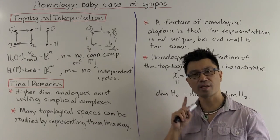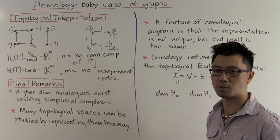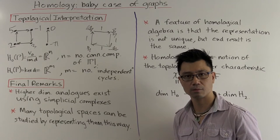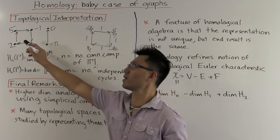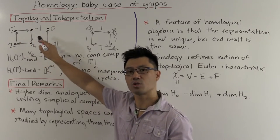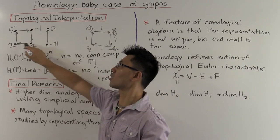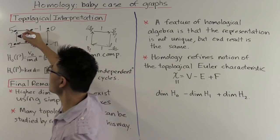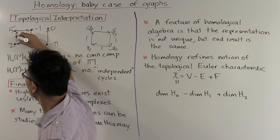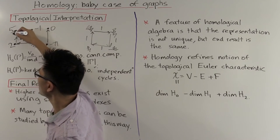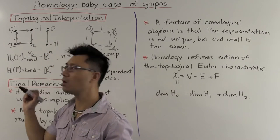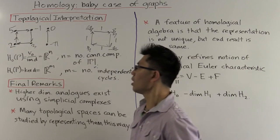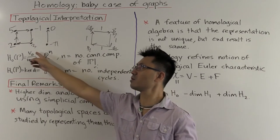But one of the things that's rather interesting, and this is a feature of homological algebra, is that the representation of the topological space is not unique. So this topological space here is essentially up to homeomorphism, just a circle or square and a line segment. We could have broken this up into two directed edges instead, by inserting an extra vertex and breaking this one edge into two.